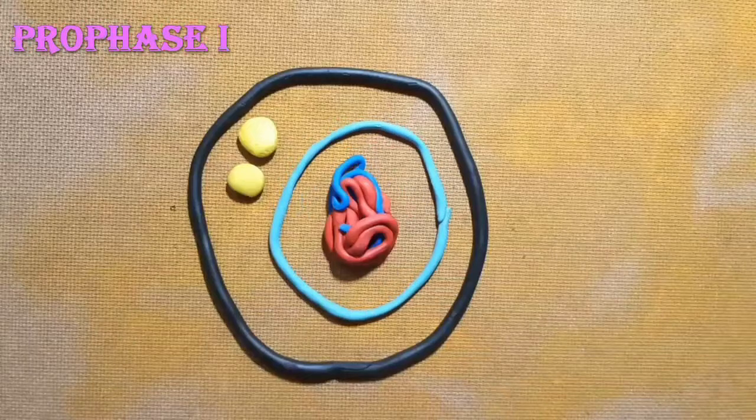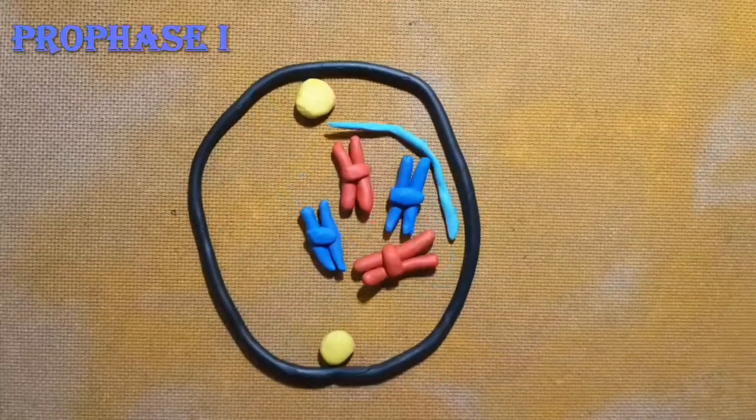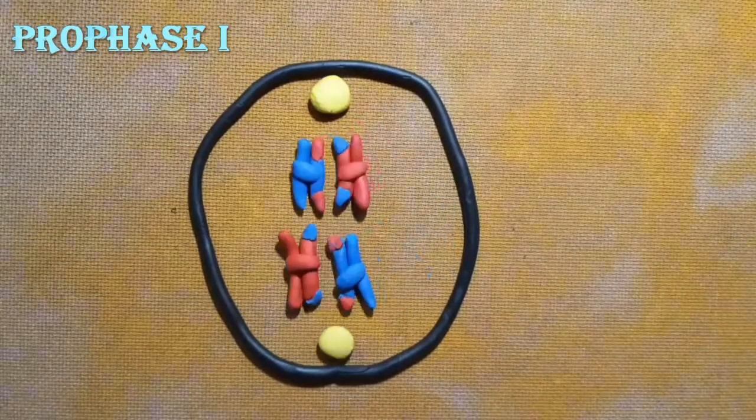Prophase I: chromatin fibers tighten up to form chromosomes. Centrosomes move to the opposite side. Nuclear envelopes disappear. Homologous chromosomes pair up and cross over to exchange chromosome parts.